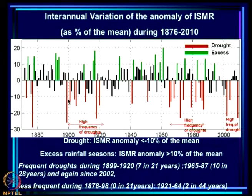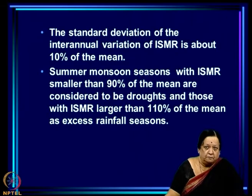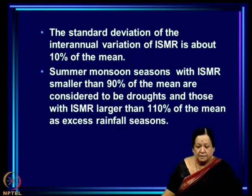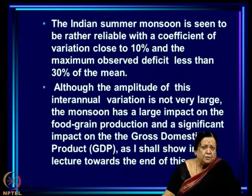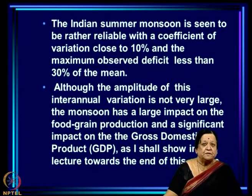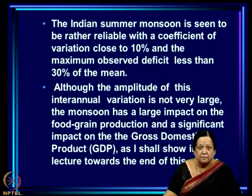We have also seen that there is a decadal-scale variation with a high frequency of droughts in certain epochs and relatively fewer droughts in others. The standard deviation of the inter-annual variation of ISMR is about 10 percent, and it is a very reliable phenomenon because the maximum observed deficit is less than 30 percent of the mean. So the monsoon comes year after year with variation in the quantum of rainfall, but it is not that great.